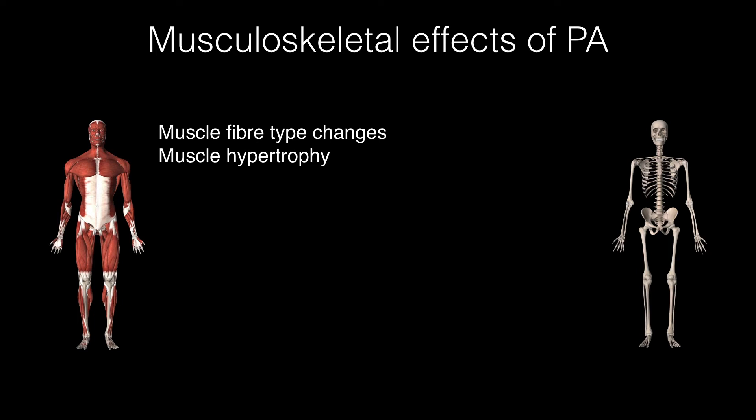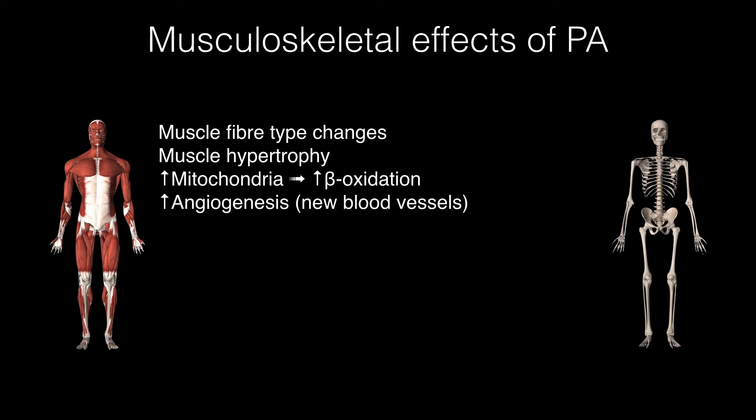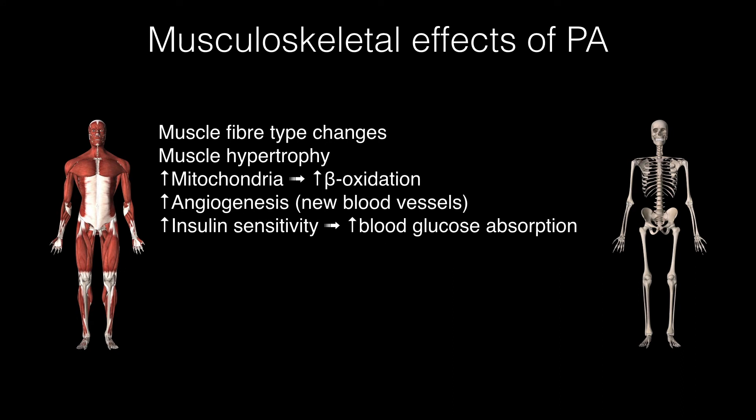With strength-type training, we get muscle hypertrophy — making muscle fibers bigger. We get increased mitochondria, which are the parts of our cells essential to generating energy aerobically. This increases a process called beta-oxidation — the ability to use fat as fuel, which is very important for health. We also see increased angiogenesis, meaning new blood vessels forming, and existing blood vessels may get bigger. This can be noticeable in lean people who exercise regularly compared to those who don't.